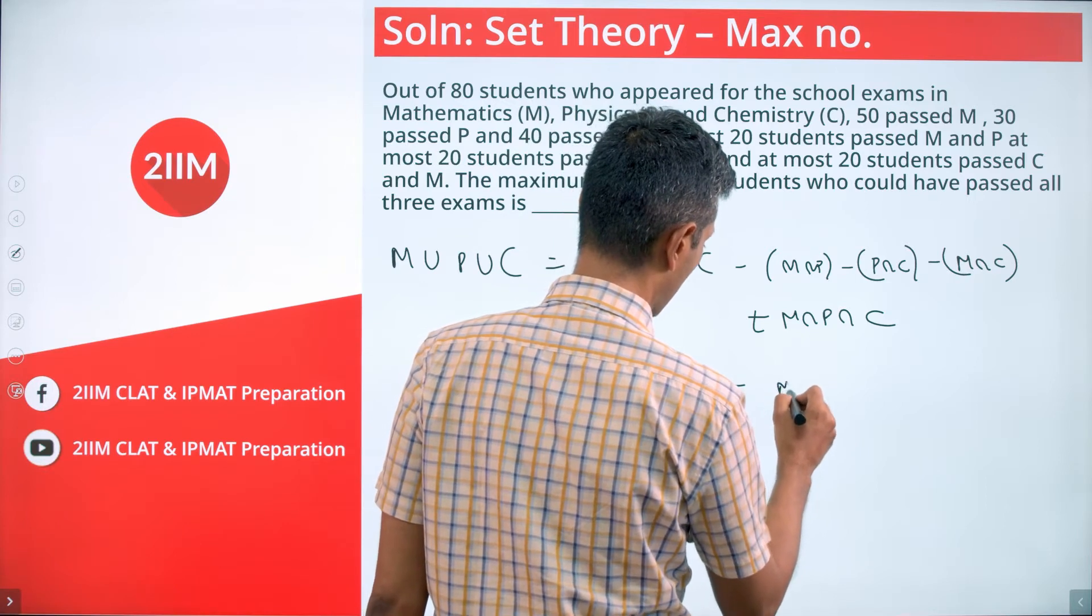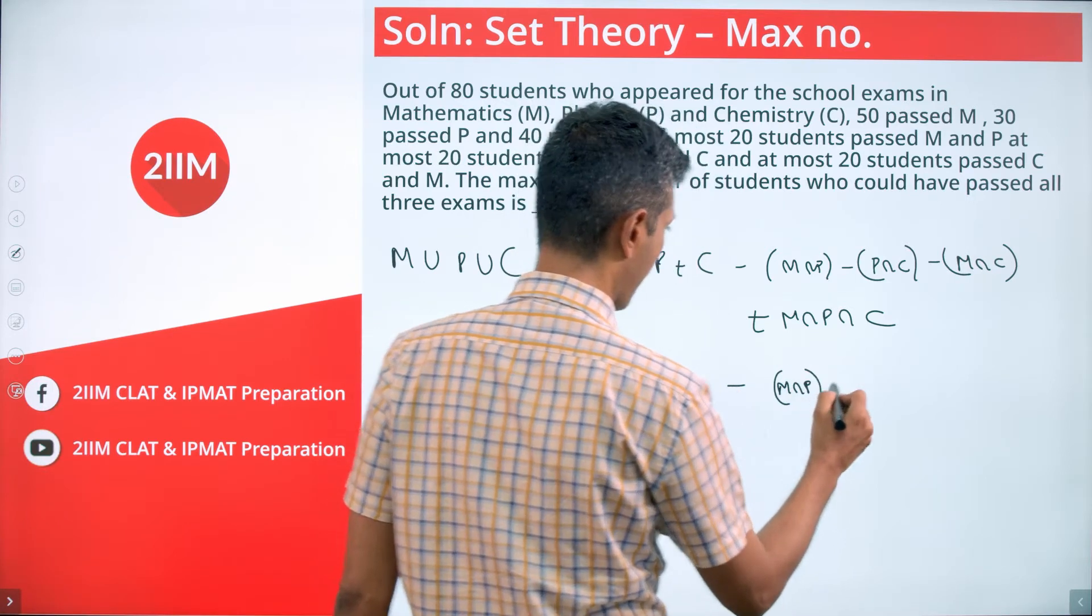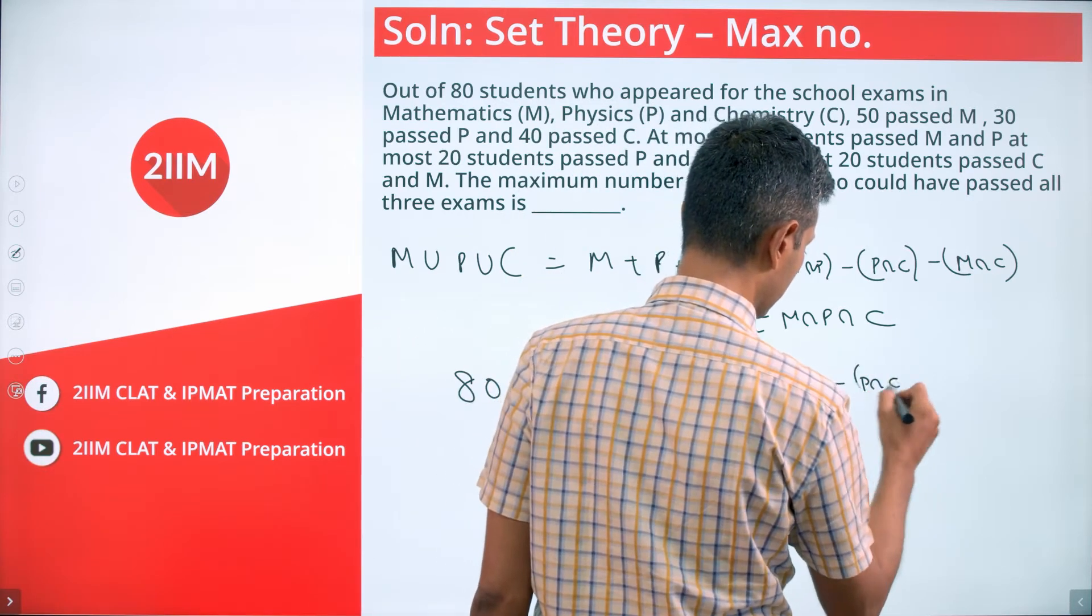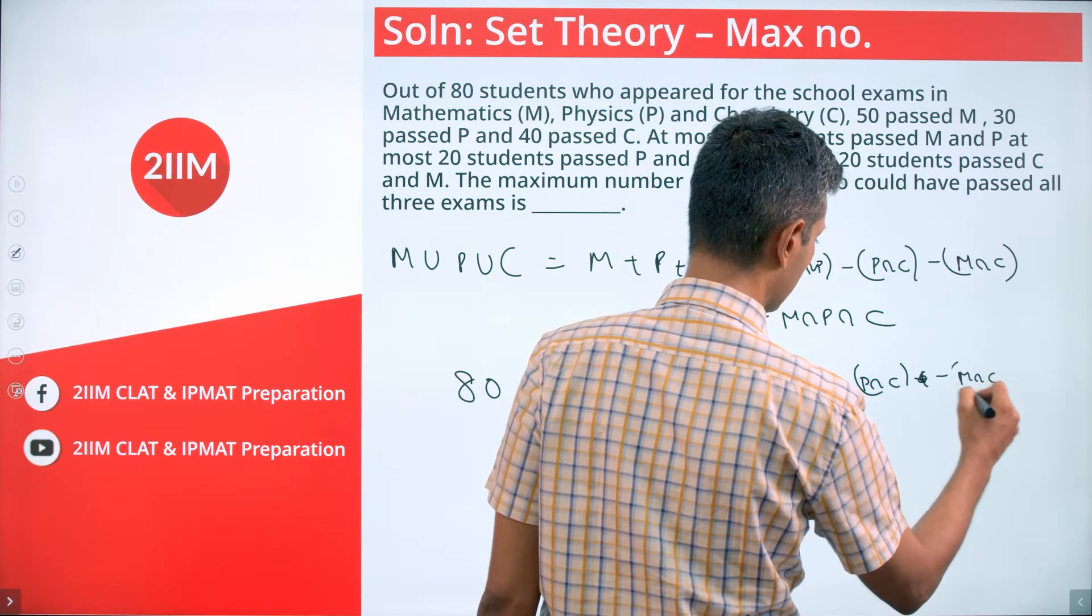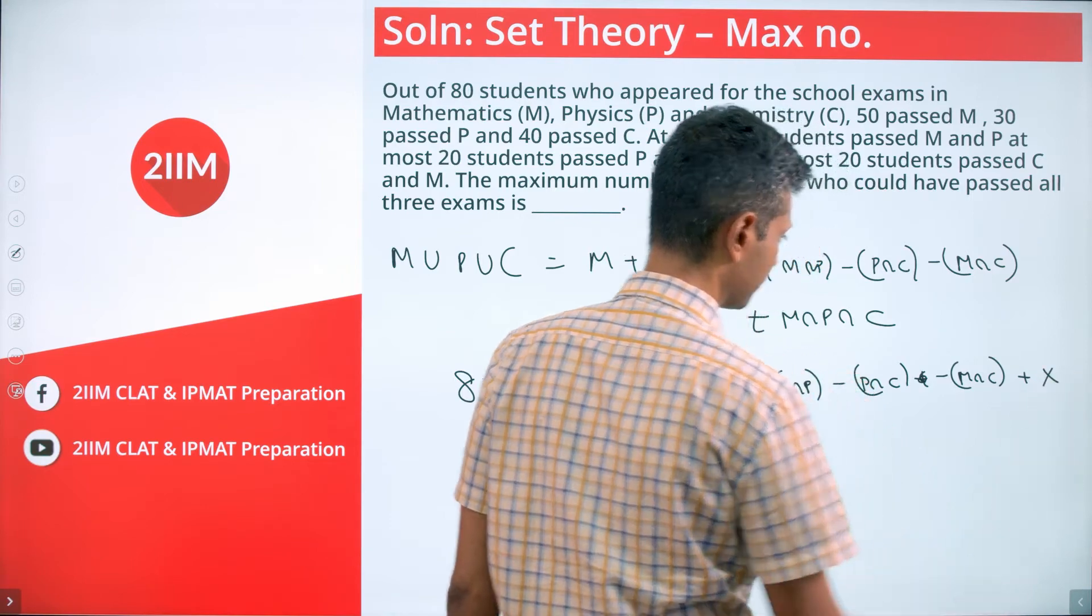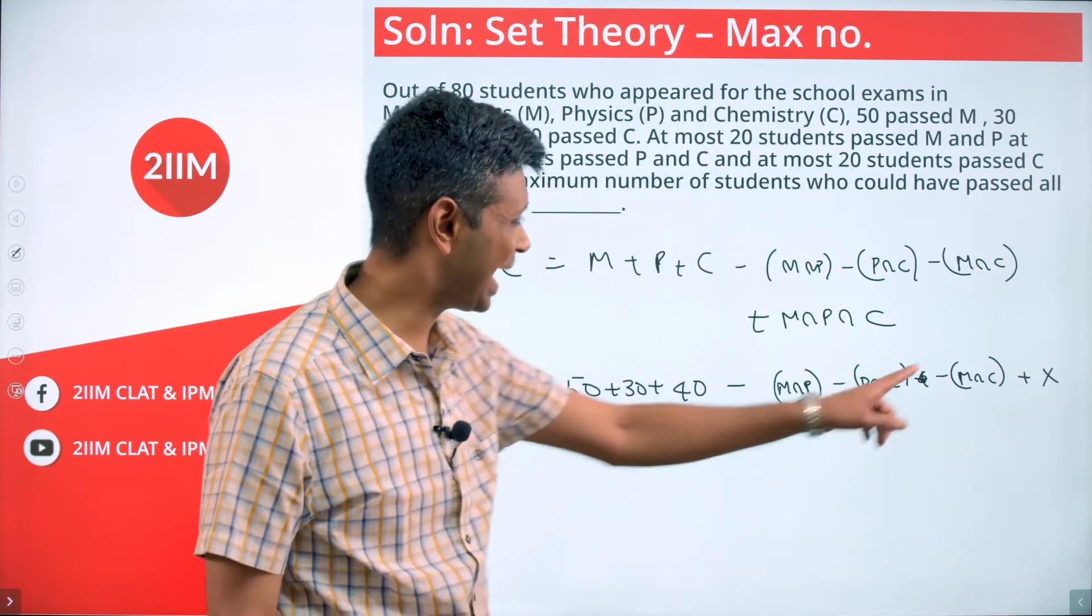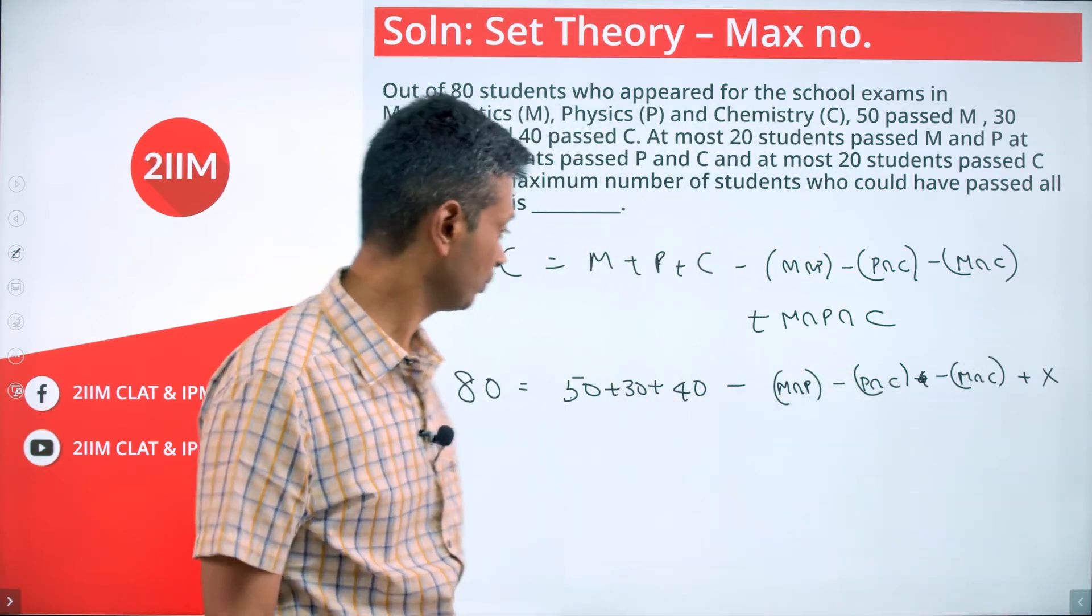That equals 80, which gives us 50 plus 30 plus 40 minus M intersection P minus P intersection C minus M intersection C plus x. We want to have x as high as possible.